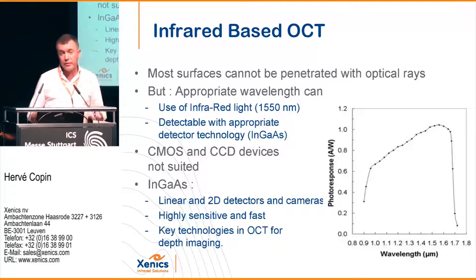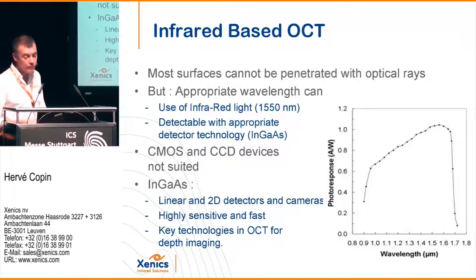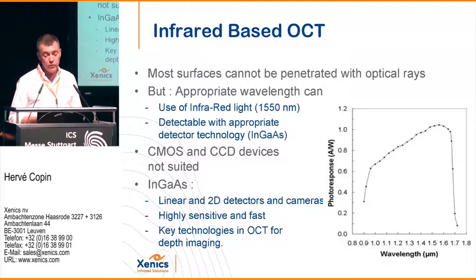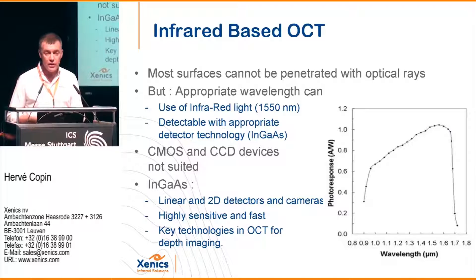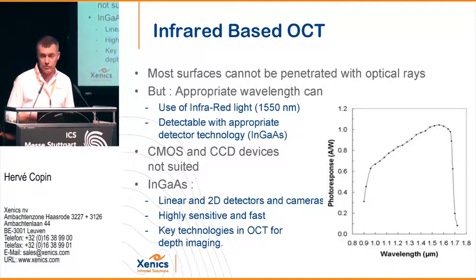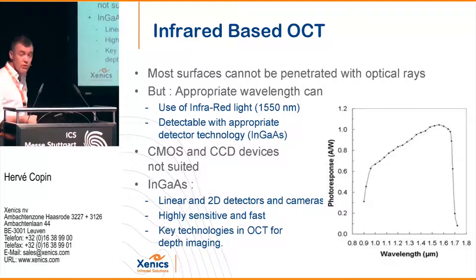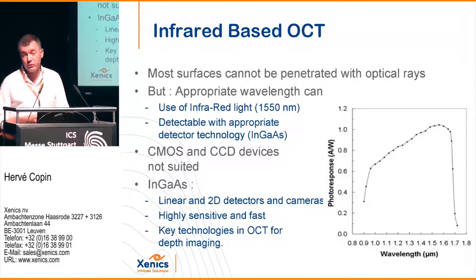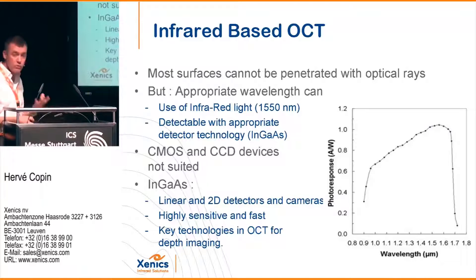Why use infrared instead of visible light for OCT? Shortwave infrared can penetrate several materials much more than visible light. Using shortwave infrared from 0.9 to 2.5 micrometers, you can go deeply into the material — up to 6 mm depth, which is much more than visible light allows. For that you need to use a special sensor developed at Xenix: InGaAs sensors, because CMOS or CCD are not sensitive beyond 1 micron. This sensor type is needed to detect light at those various wavelengths.